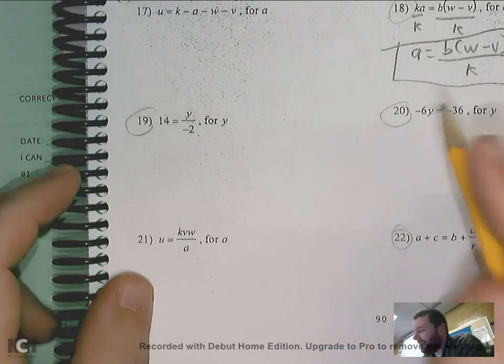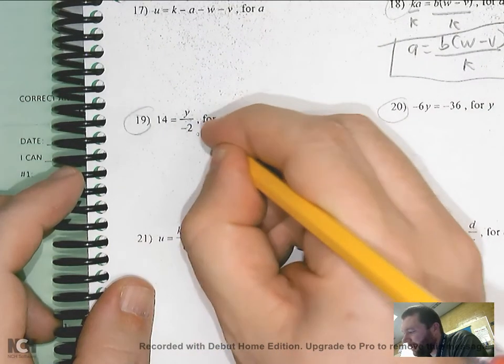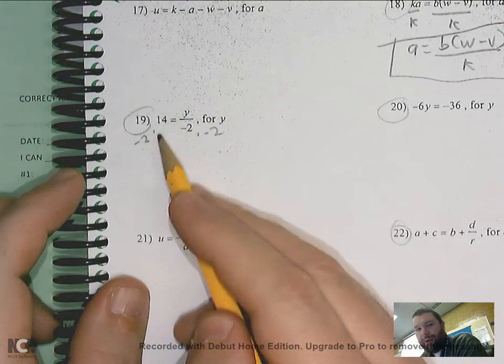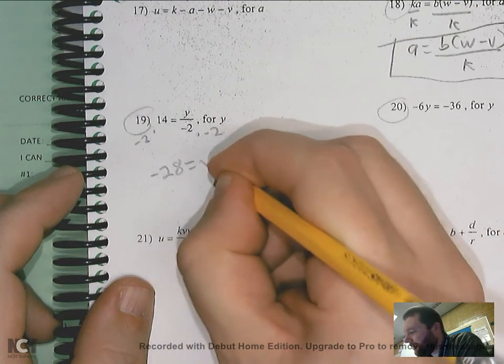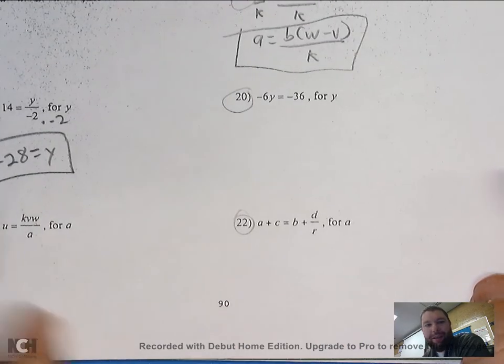Number 19, I'm solving for y. It's y over negative 2. So I have to multiply each side by negative 2. And again, this is an actual equation. I can solve this, right? 14 times negative 2 would be negative 28. Don't get tripped up on those. Those are easy problems.